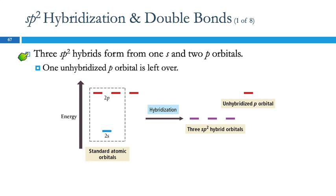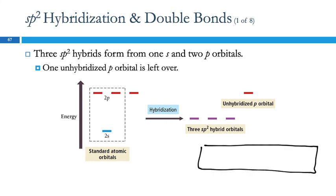Let's look at a different hybridization scheme. Here again we have the s orbital and the p orbitals. Before, we looked at taking all of these and hybridizing them together. But what if we just want to hybridize three of them? We're going to take the s orbital and two of the beds from the p room.